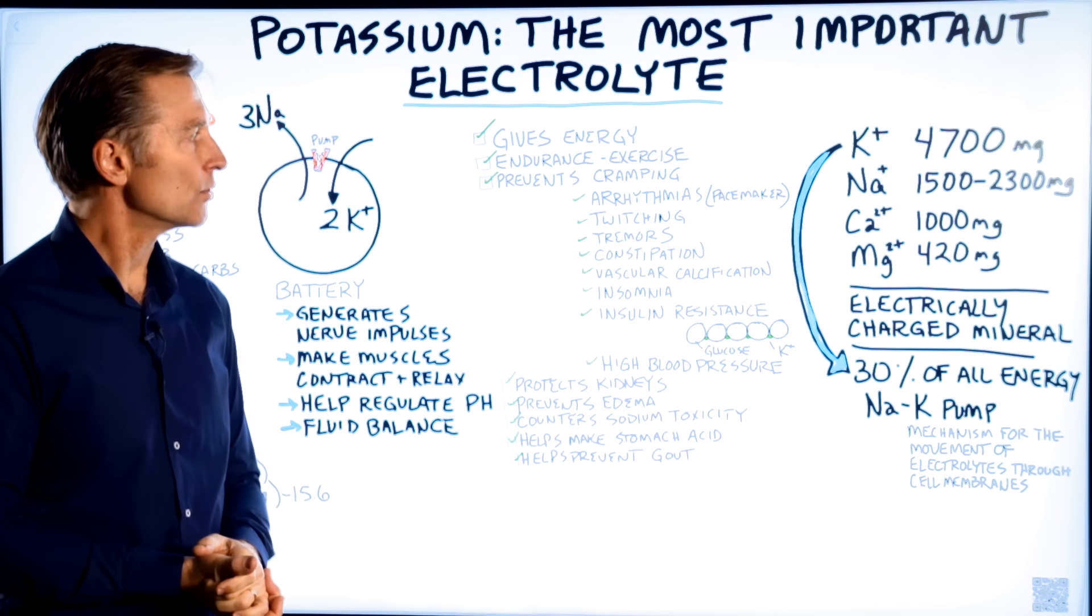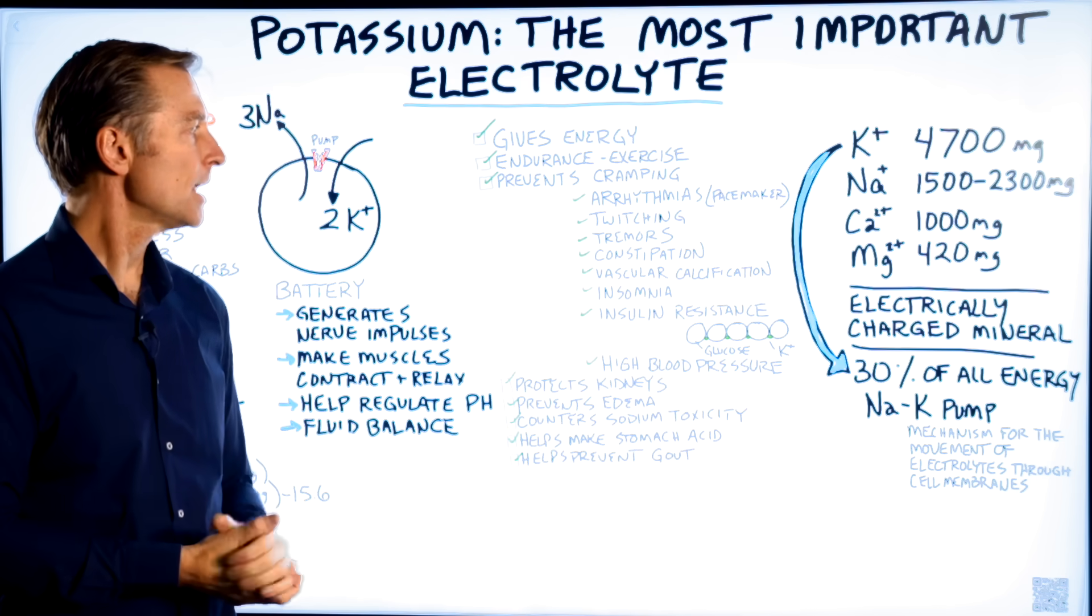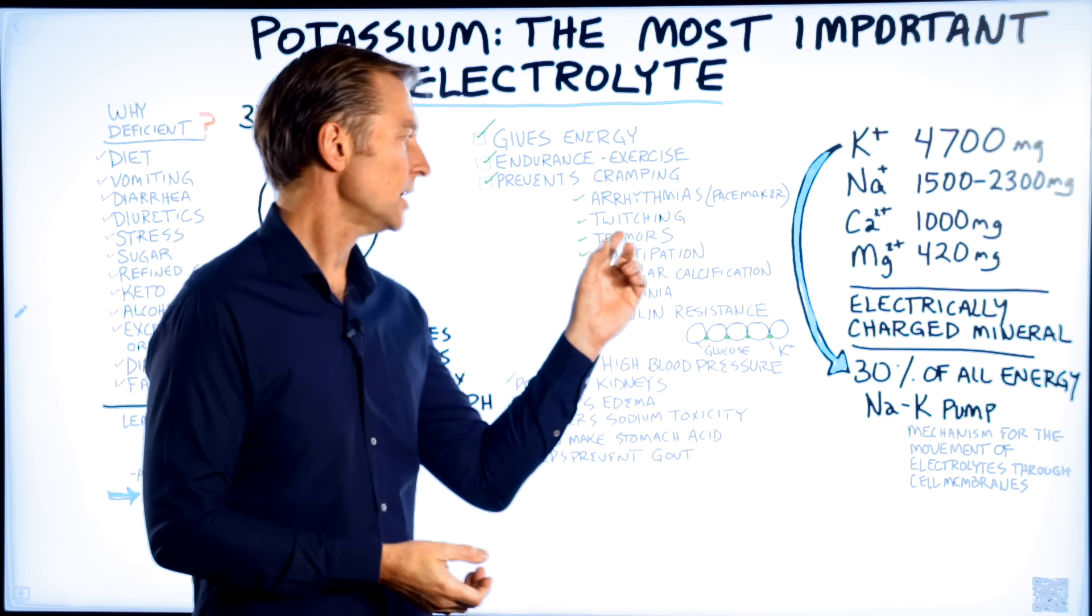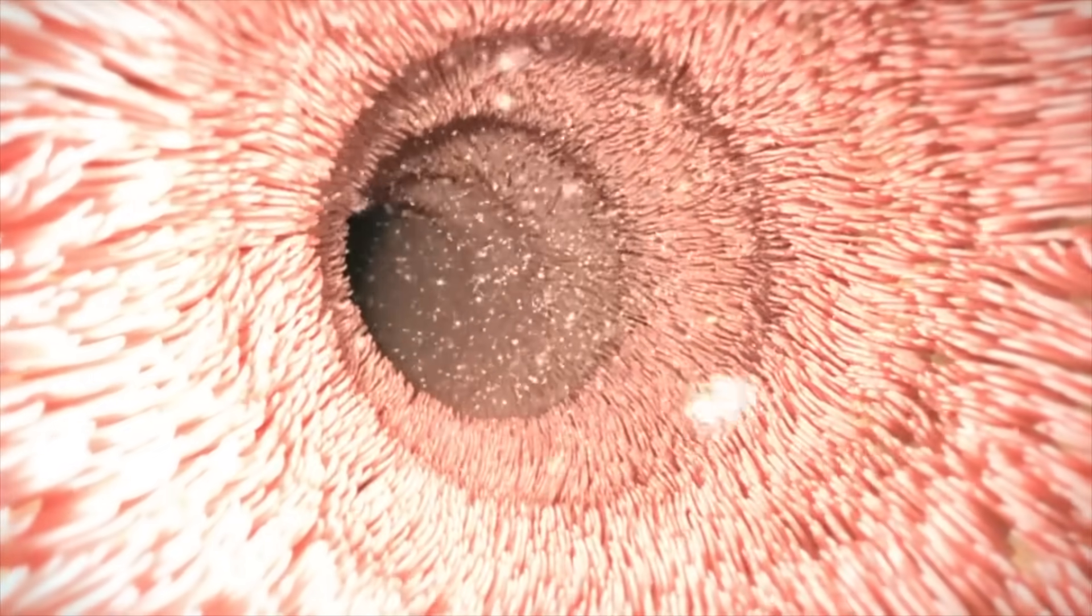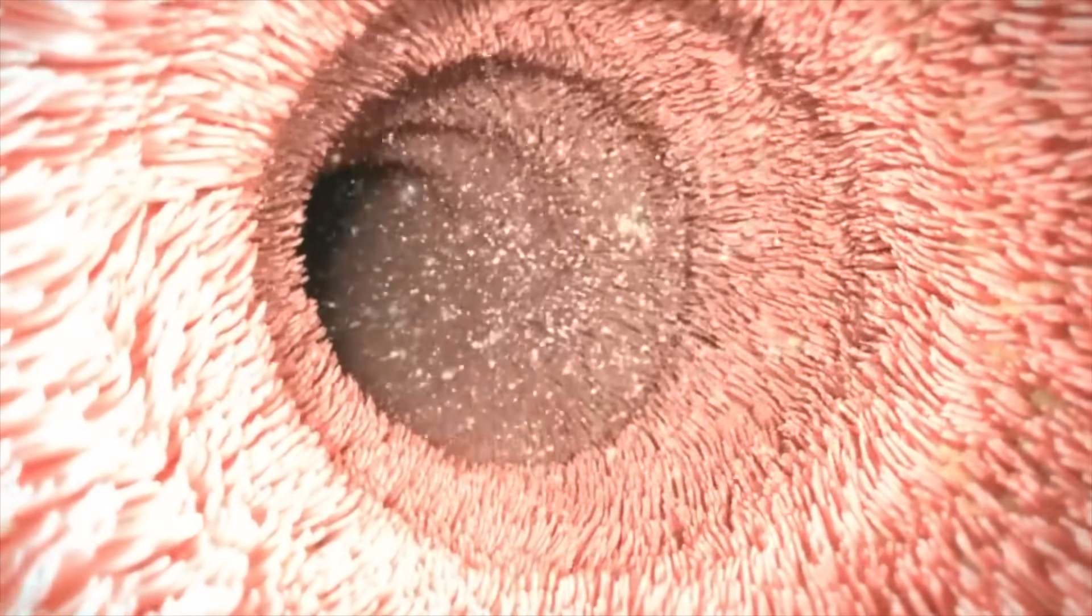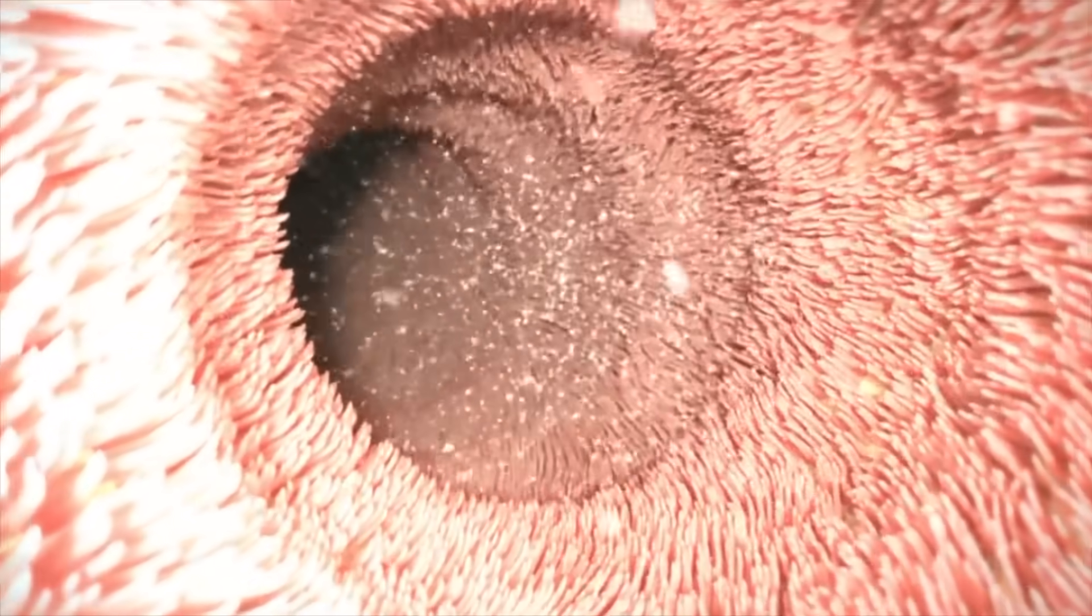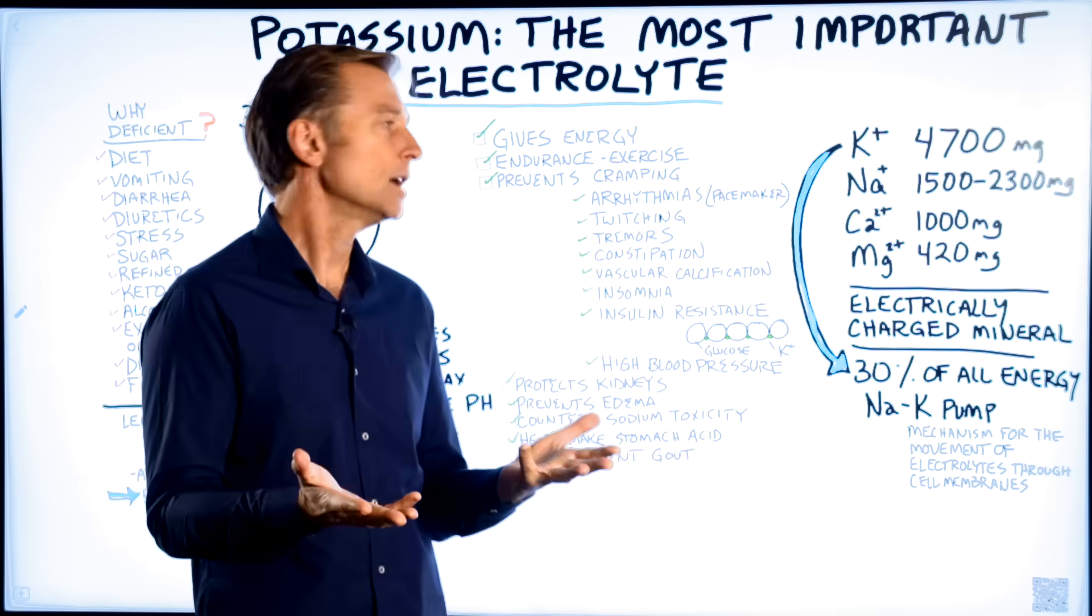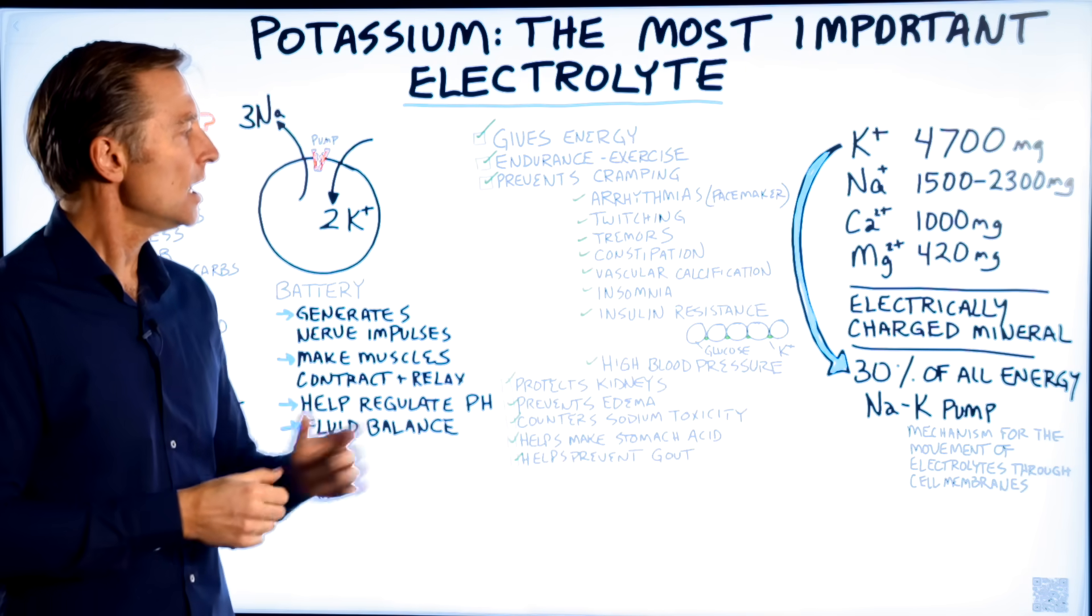Also, potassium is necessary to prevent arrhythmias, which is part of the pacemaker of your heart. It also helps prevent twitching, tremors, constipation, because you have this, it's called peristalsis, this pumping action through your colon, which is controlled by the nervous system and the muscular system. So without potassium, you don't get this pumping action through the colon and things just kind of sit there.